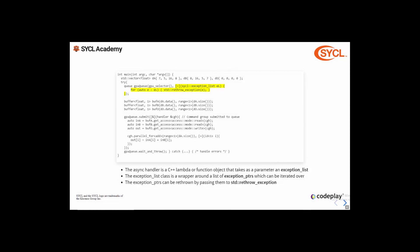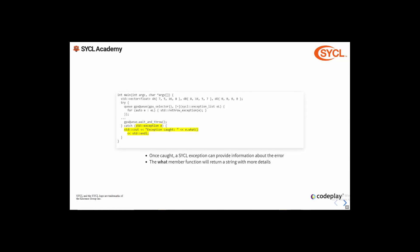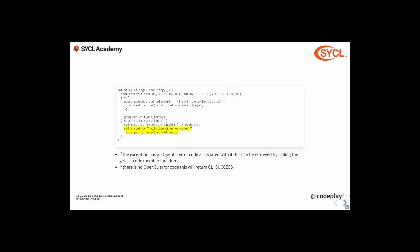An async handler must take as a parameter an exception list, which is a wrapper around a list of exception pointers that can be iterated over. Exception pointers can then be re-thrown by calling std::rethrow_exception. Once an exception — synchronous or asynchronous — is caught, it can be used to provide information about the error. The what member function provides a message with more details about the error, though the exact details are implementation defined. If the exception has an OpenCL error code associated with it, this can be retrieved by calling get_cl_code; if there is no OpenCL error code, this returns CL_SUCCESS.